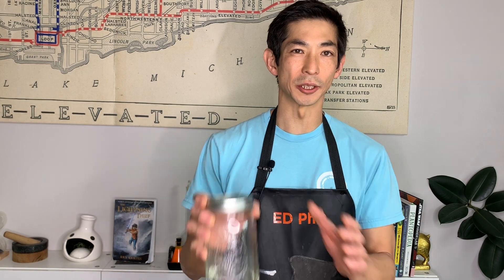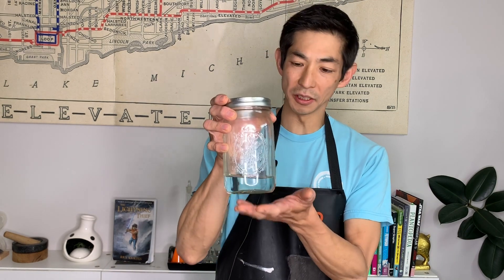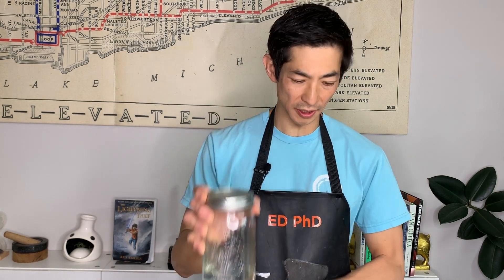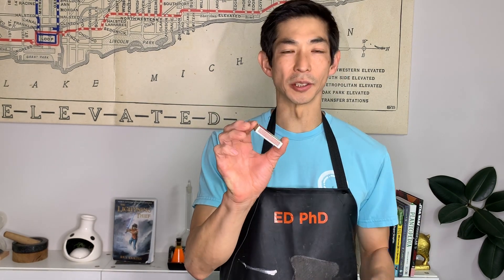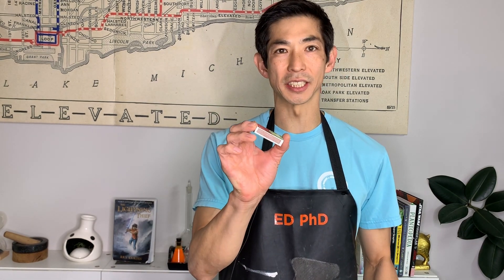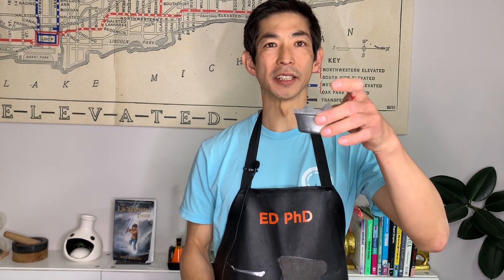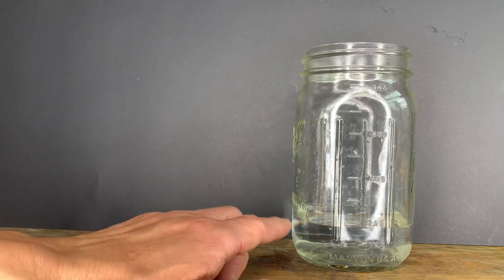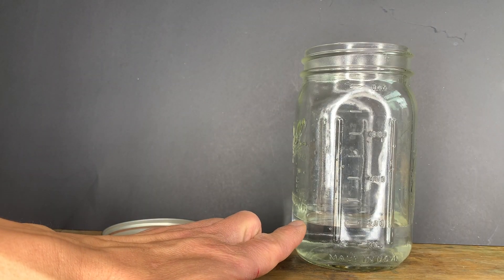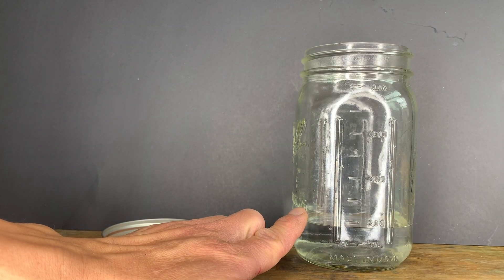For the first method of creating a cloud, you're going to need a jar with warm water, matches — though you could also use hairspray — and ice. We have a small amount of warm water in our jar.